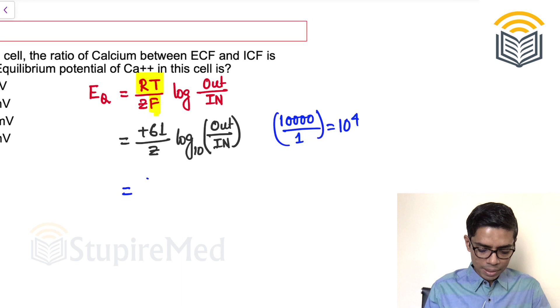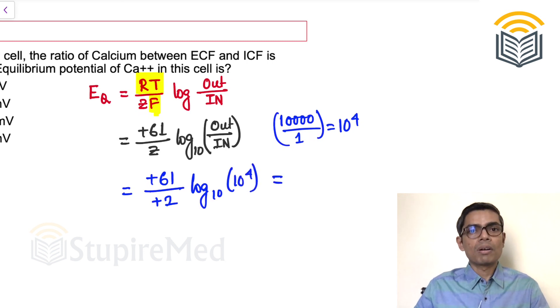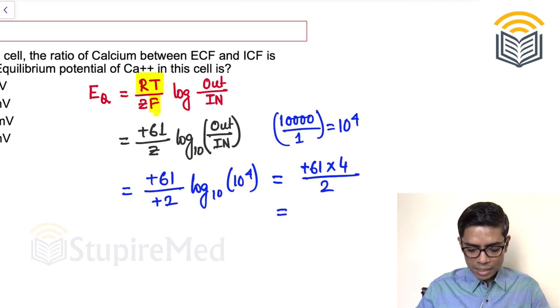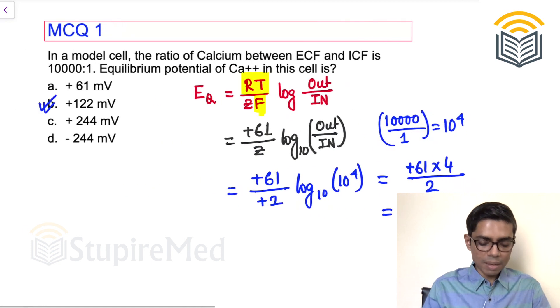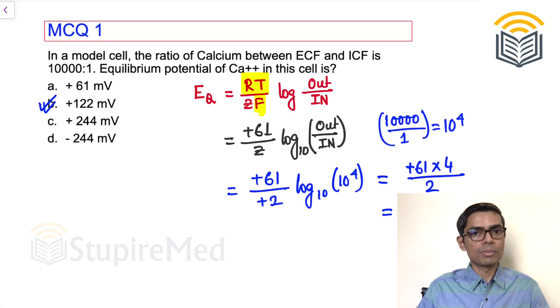If I put it into this formula, plus 61, Z is the valency. So valency of calcium is plus 2. Now this is log base 10, 10 to the power 4. We all know that log 10 to the power 4 is nothing but 4. So plus 61 multiplied by 4 upon 2, this is nothing but plus 122 millivolt.